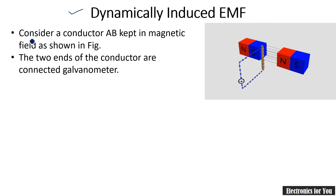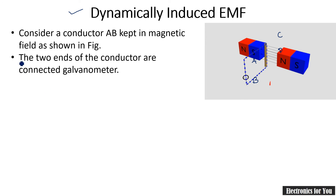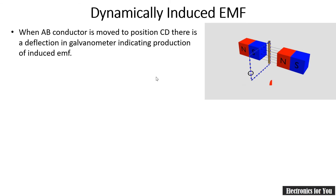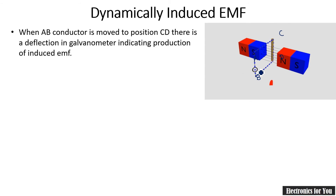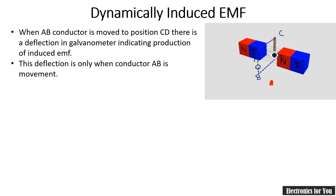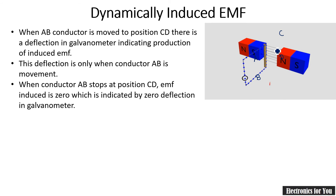Let us explain it in detail. Consider a conductor AB — this conductor is moving from position AB to position CD. The two ends of this conductor are connected to a galvanometer. When conductor AB moves from position AB to CD, it cuts the magnetic field lines, and therefore an EMF is induced.